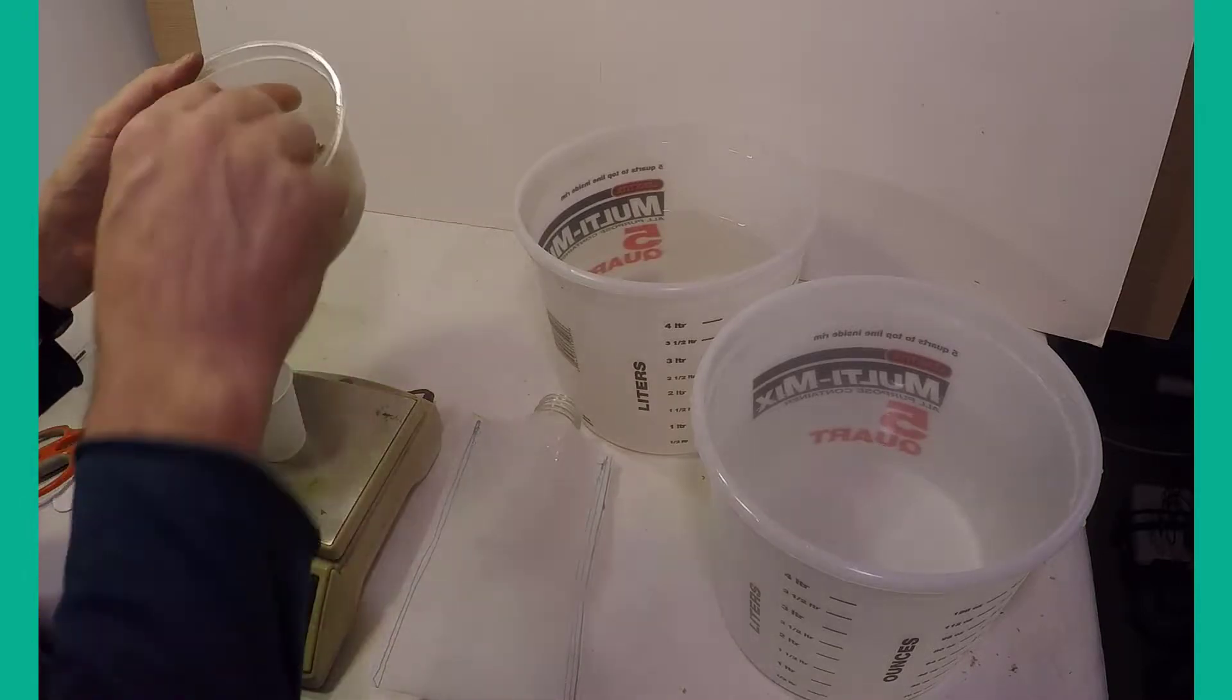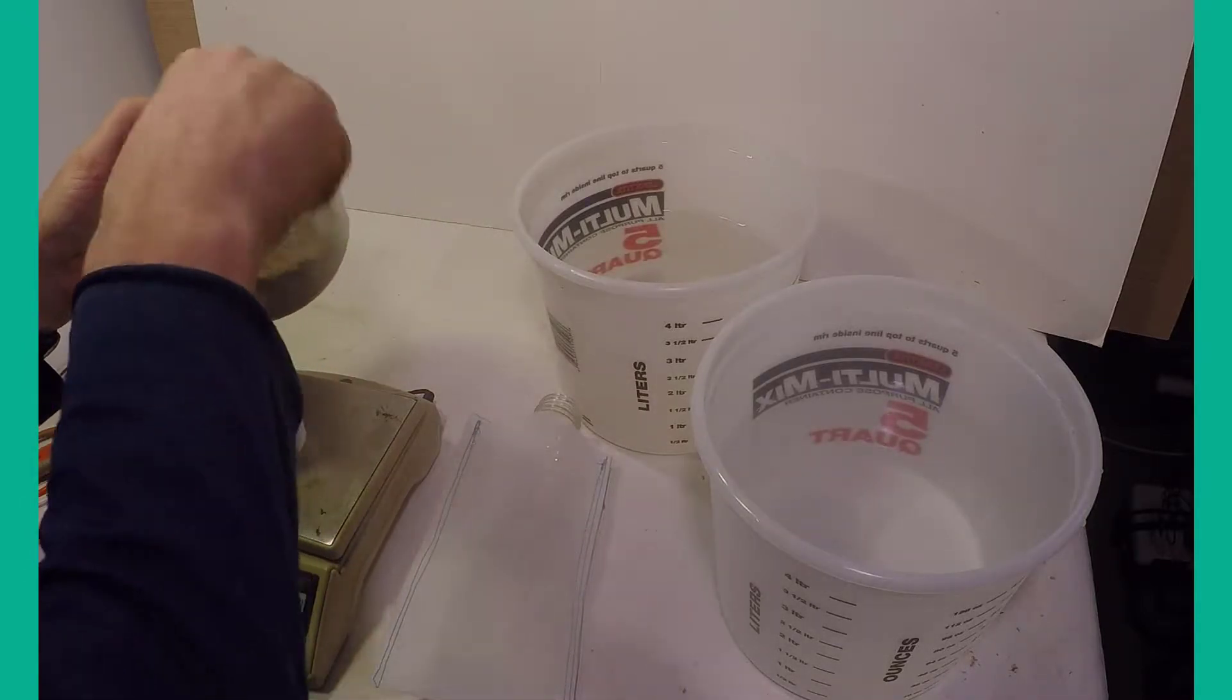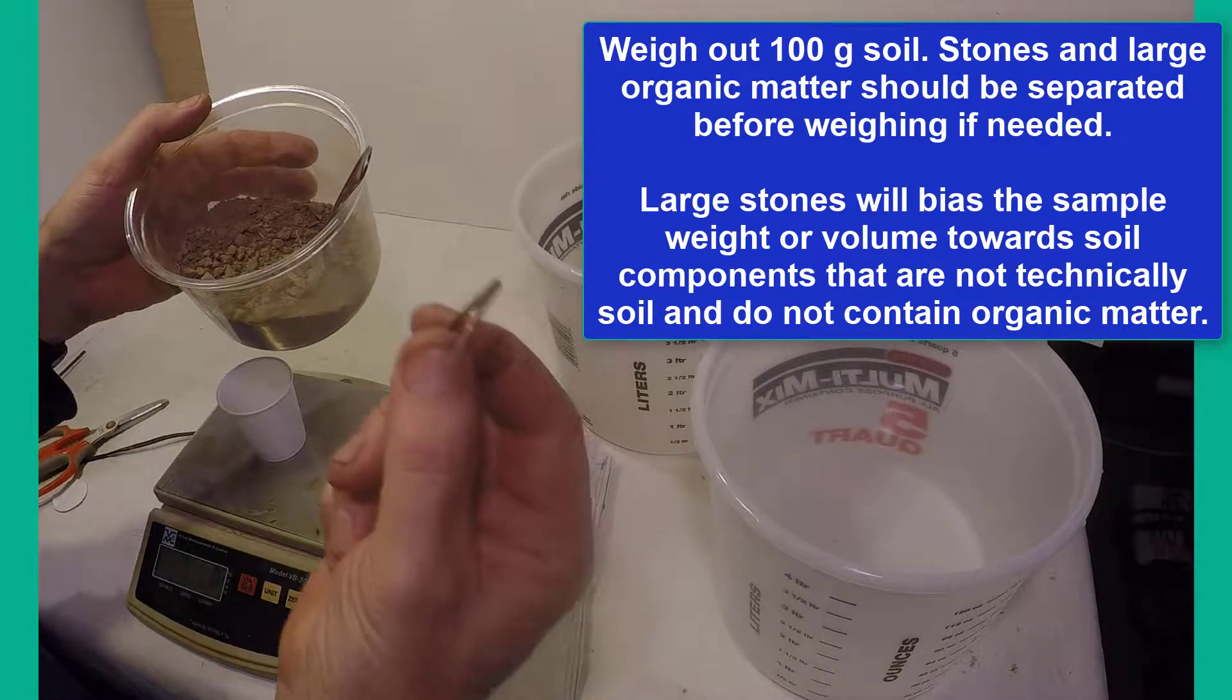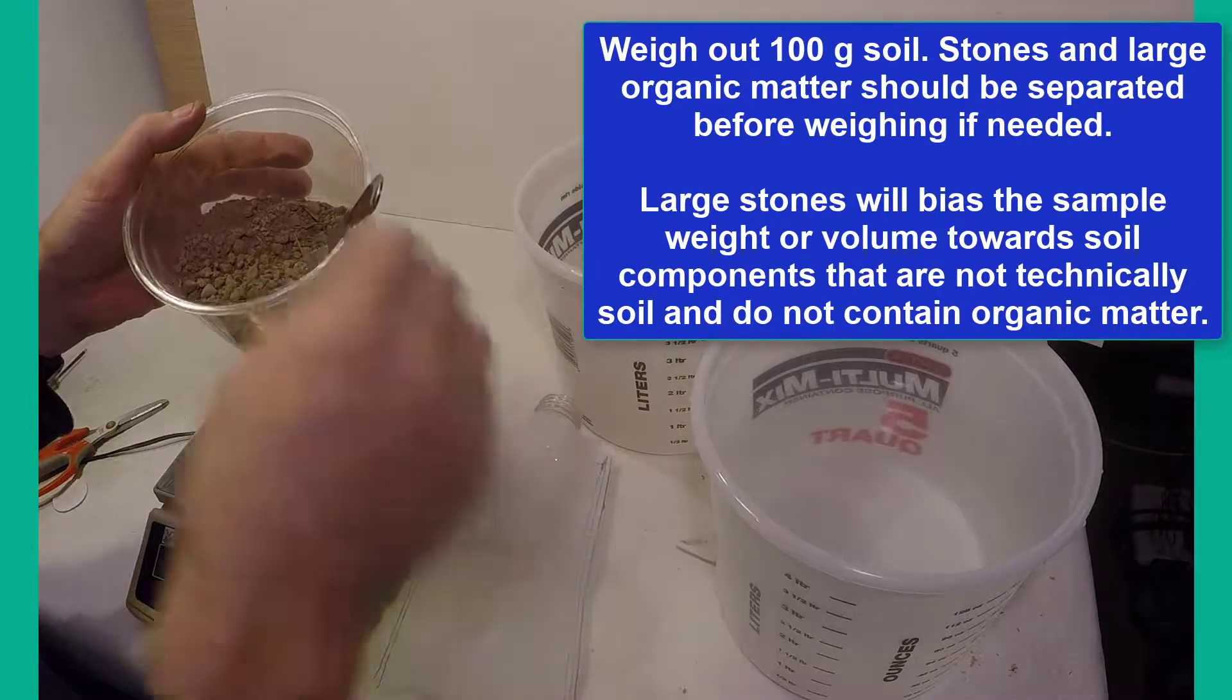First, 100 grams of soil is weighed. If the soil was not previously sieved, then you should pick out larger stones and large pieces of organic matter.